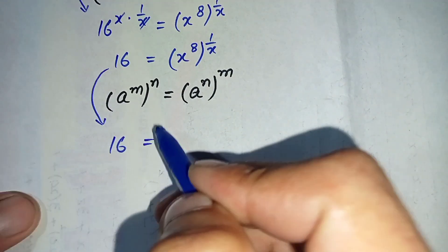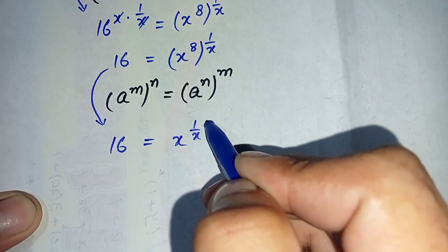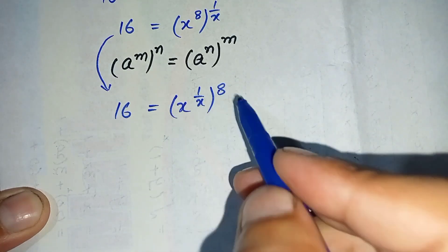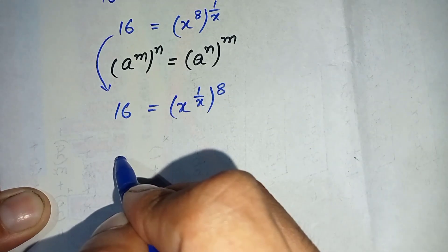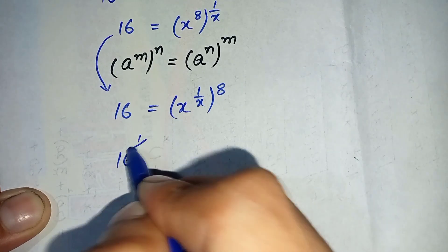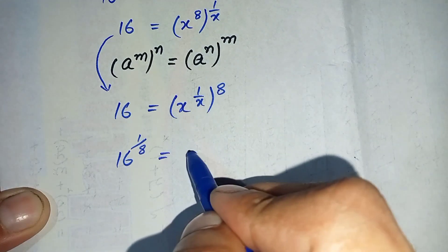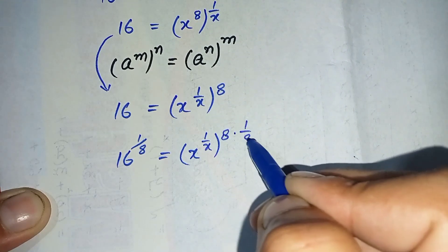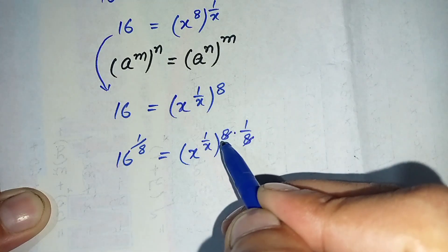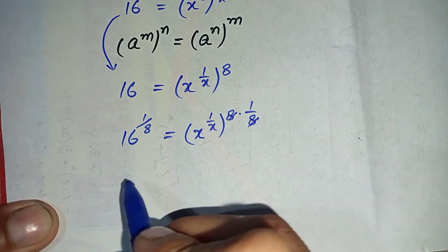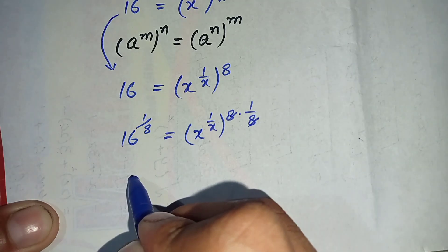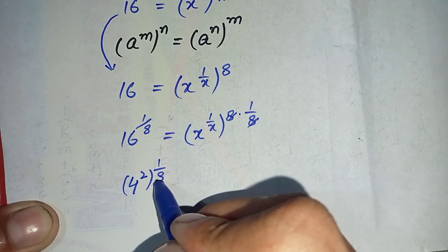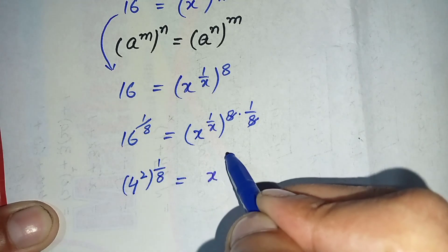Applying this formula, we get: 16 is equal to x raised to power 1 over x, all raised to power 8. Now taking 1 over 8 as a power on both sides to eliminate the 8 from the right-hand side, the equation becomes 16 raised to power 1 over 8 is equal to x raised to power 1 over x, all raised to power 8 multiplied by 1 over 8. The 8 and 8 cancel, and we can write 16 as 4 squared, since 4 times 4 is 16, giving 4 squared whole power 1 over 8 is equal to x raised to power 1 over x.